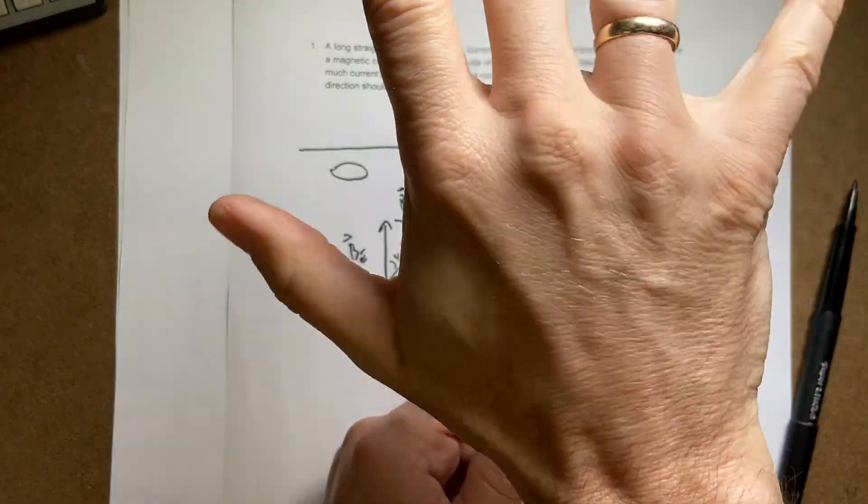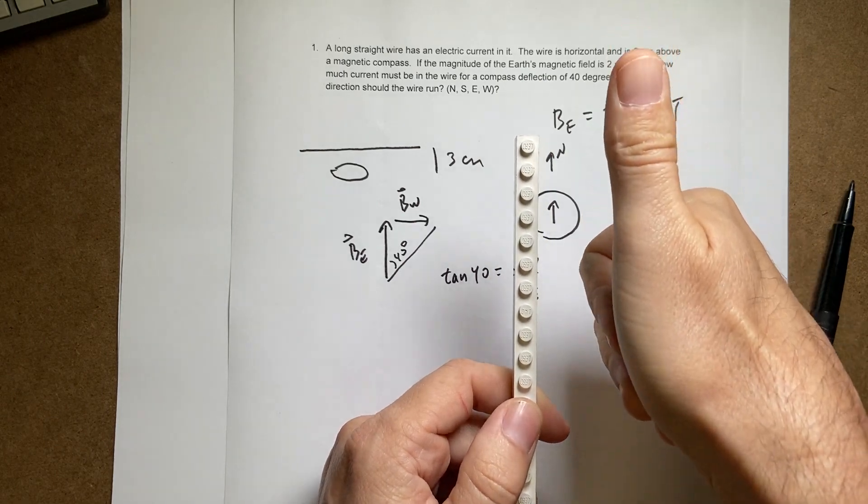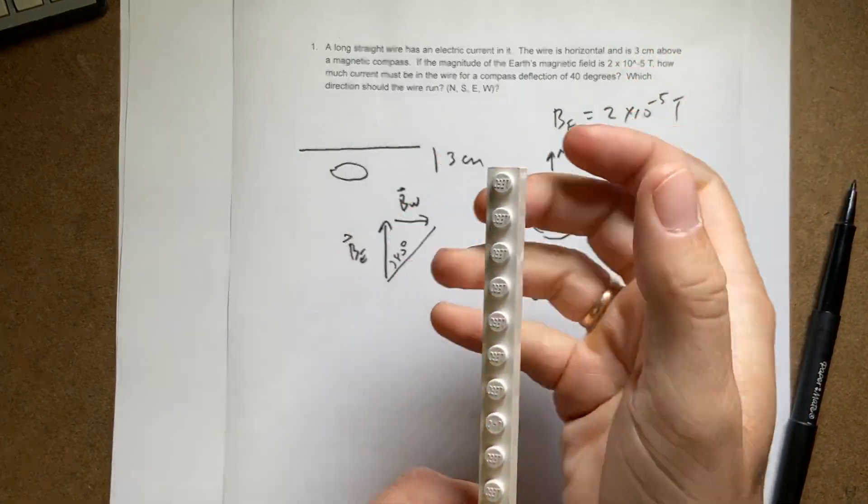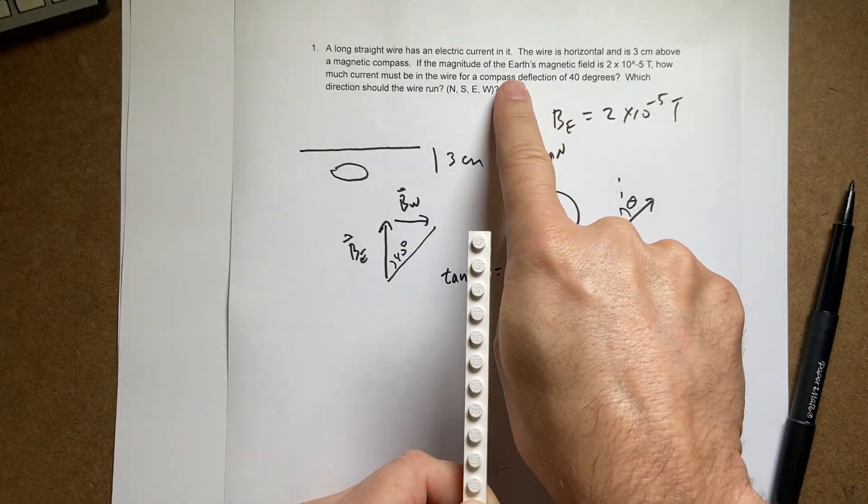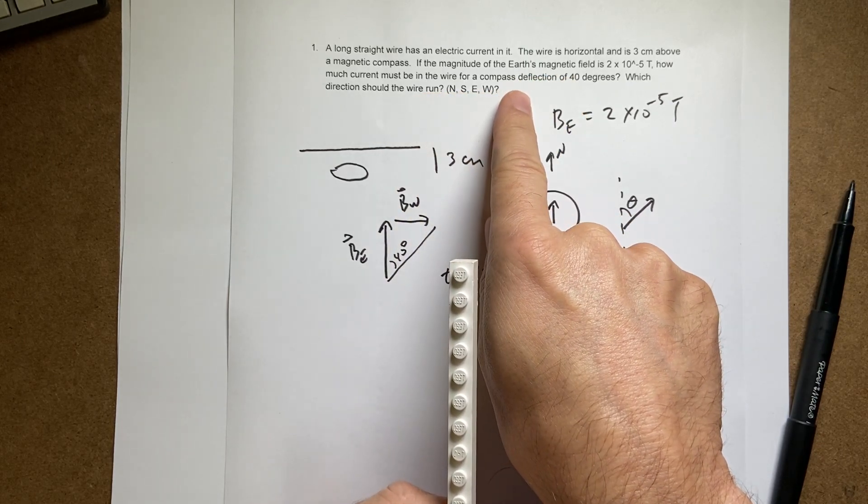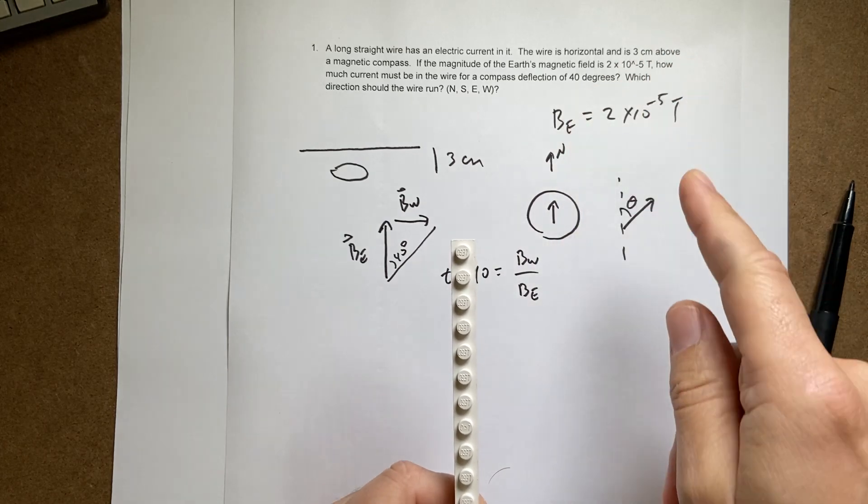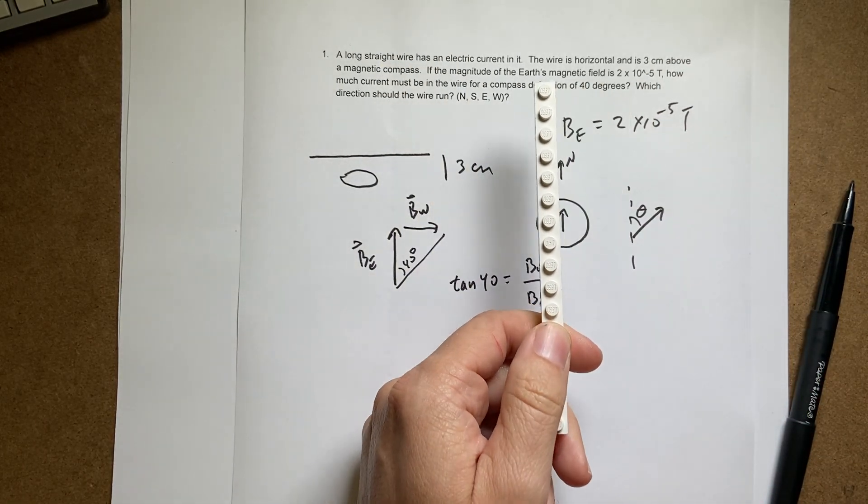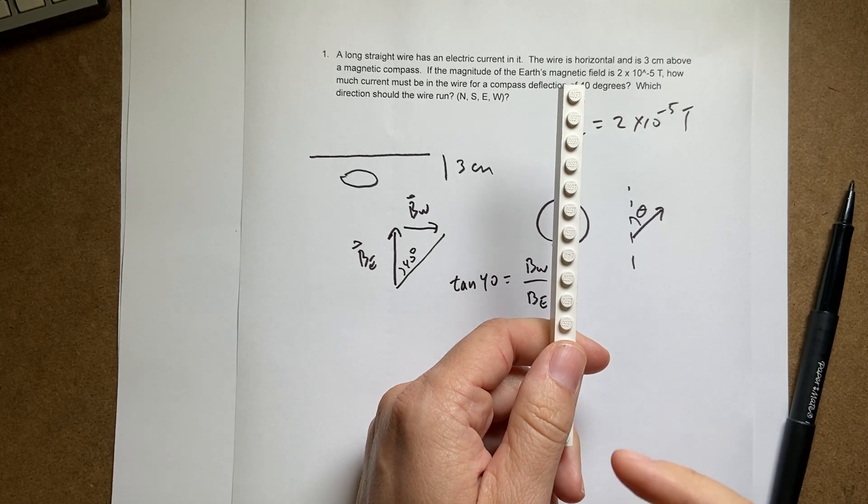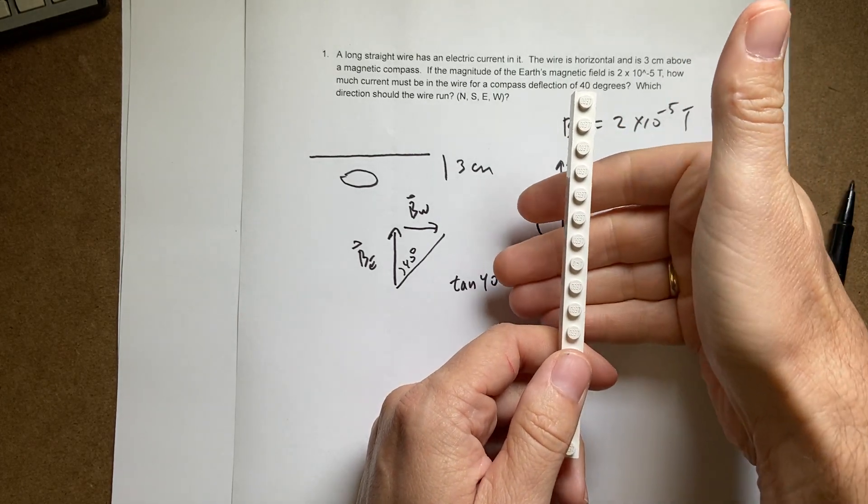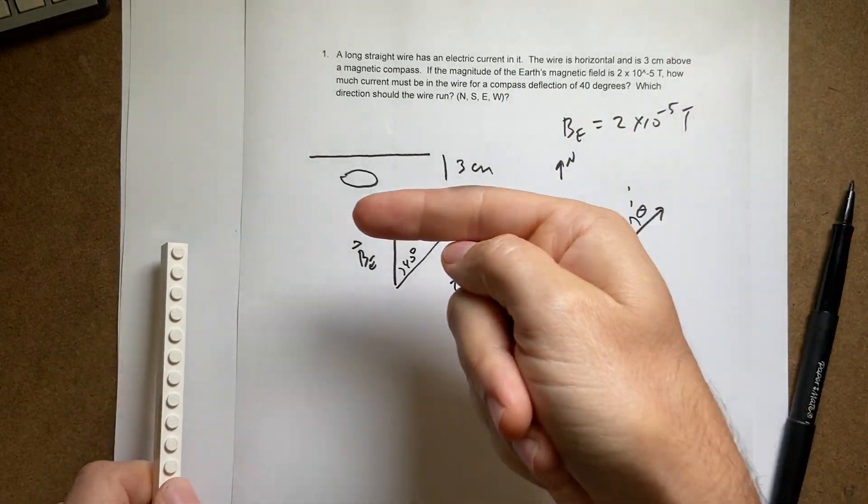So if you put your thumb of your right hand in the direction of the current, your fingers point in the direction of the magnetic field. So I didn't say for the wire to deflect 40 degrees which way. Okay. So if I want the, if I have the compass like this and the wire like this.